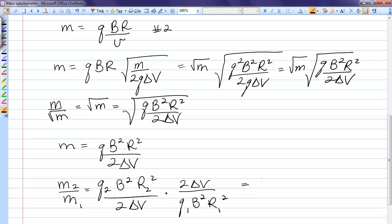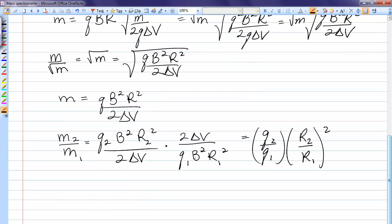Eliminating the Bs and the delta Vs, I'm left with the ratio of the Qs and the ratio of the radii squared. Now, each of those ratios are given. Q2 is twice Q1, and then R2 is twice R1. So, it's 2 squared, and the ratio of the masses is 8.